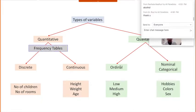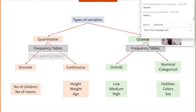Now, the different ways to summarize qualitative and quantitative data: one way is to do frequency tables. Frequency tables are a good way to summarize either quantitative or qualitative data. Both bar graphs and pie charts are also a good way to summarize data.